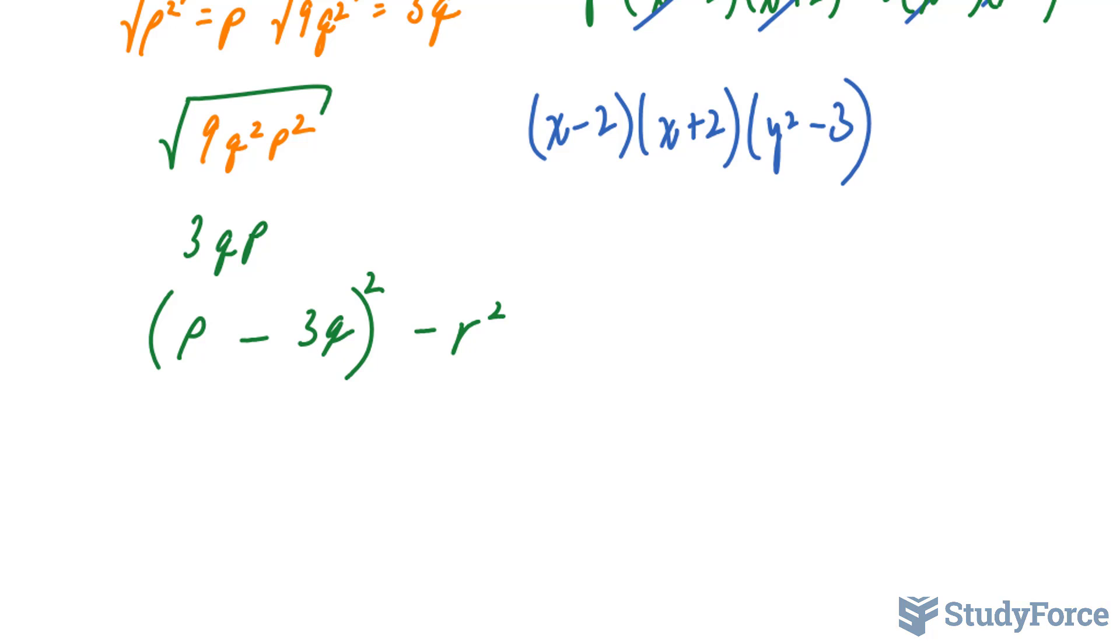Now that we finished the first part, this term and this term form a difference of squares. This is a perfect square, and so is this one. And we learned that with a difference of squares, we can split these up, where p minus 3q squared becomes p minus 3q, p minus 3q, and the square root of r squared is minus r plus r.